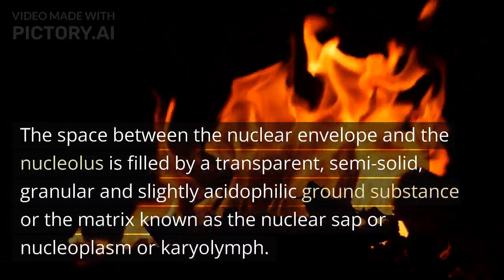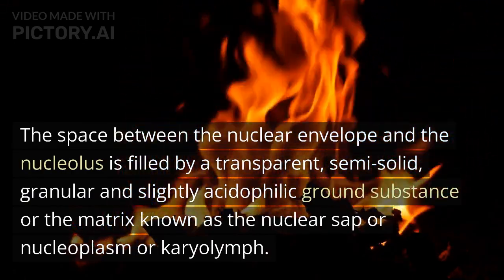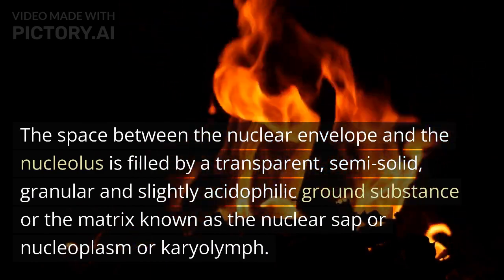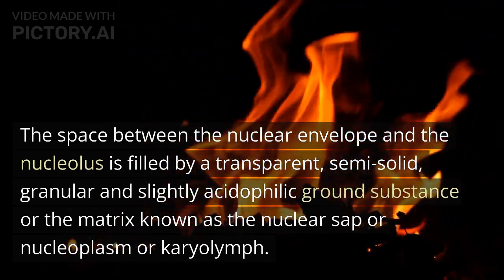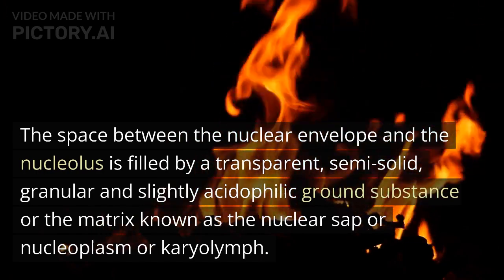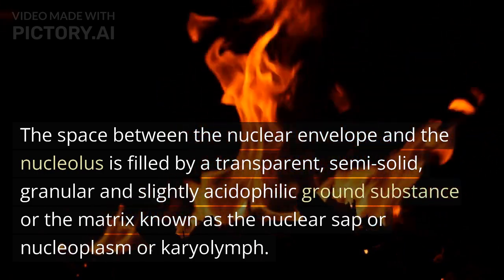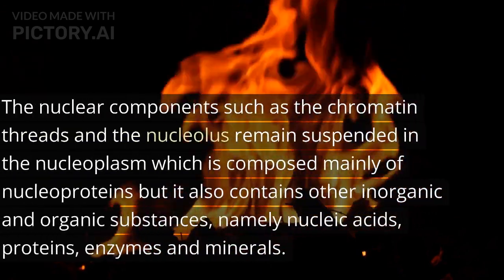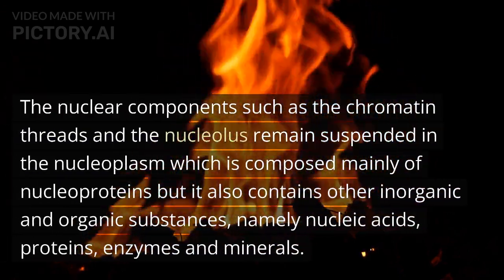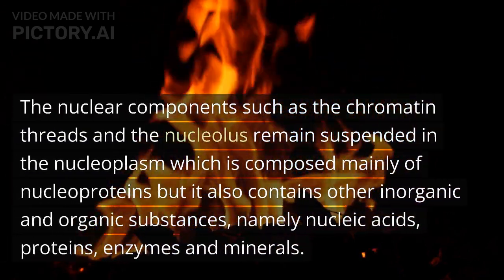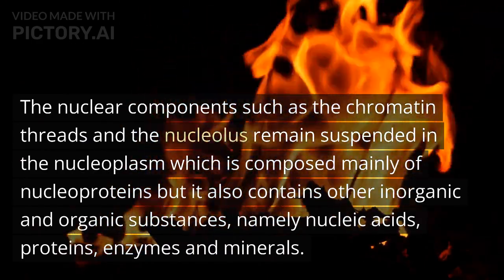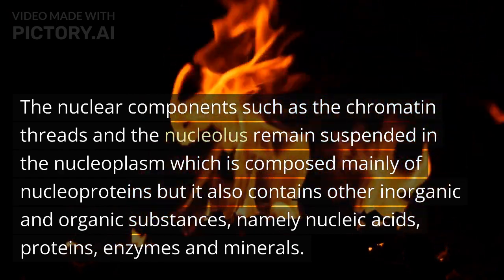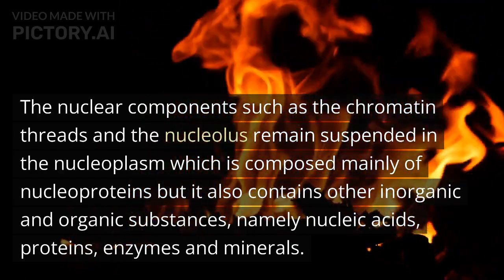The space between the nuclear envelope and the nucleolus is filled by a transparent, semi-solid, granular and slightly acidophilic ground substance or matrix known as the nuclear sap or nucleoplasm or cariolus. The nuclear components such as chromatin threads and the nucleolus remain suspended in the nucleoplasm, which is composed mainly of nucleoproteins but also contains other inorganic and organic substances, namely nucleic acids, proteins, enzymes, and minerals.